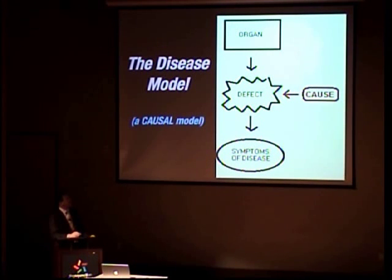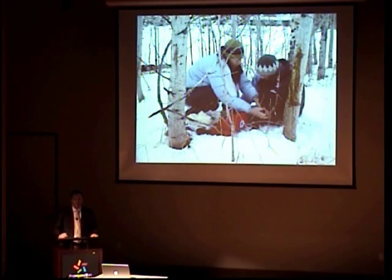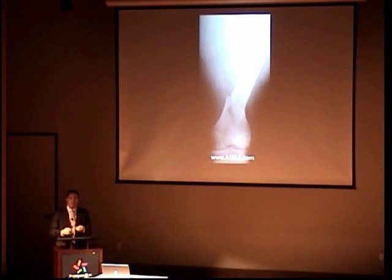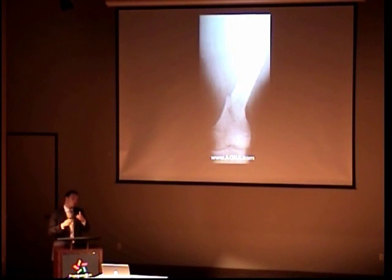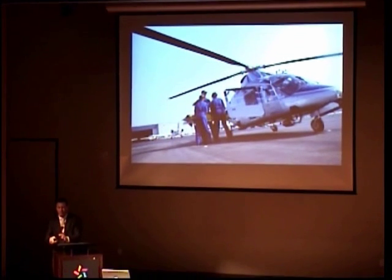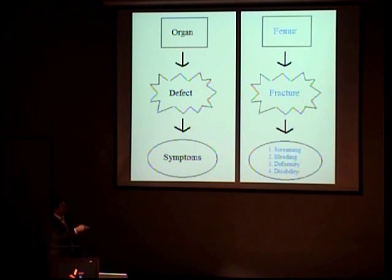Let's say you go skiing in the beautiful state of Utah, ski a little too fast, and hit a tree. You might get a defect in one of your organs — a fracture in the femur, the long bone of the leg. If you get that defect in that organ, you're going to show certain symptoms. Everybody gets the same symptoms: the four classic symptoms of a broken leg. When the patient rolls in the ER door, we fit what we're seeing to the model. The organ is the femur, the defect is a fracture, and the screaming, bleeding, and bone sticking out — every single one of those symptoms can be traced back to that defect in that organ.